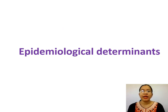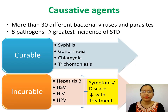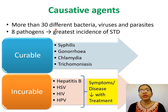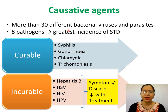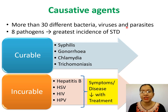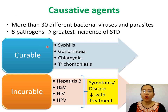Now the epidemiological determinants—first, the causative agents. More than 30 different bacteria, viruses, parasites, etc., are implicated for causation of sexually transmitted diseases. Out of these, eight pathogens are most important and responsible for the greatest incidence of STDs. Among these eight pathogens, four are generally considered curable, whereas the other four are generally considered incurable—mainly viral infections.